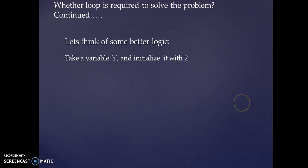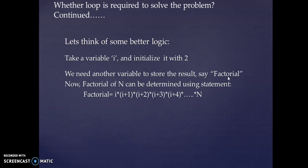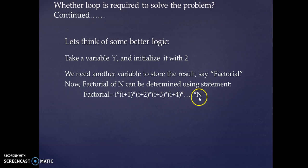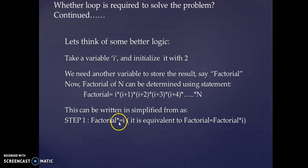Take a variable i and initialize it with 2. We need another variable to store the result — let's call it factorial. Factorial of n can be determined using the statement: factorial = factorial multiplied by i. Here i is 2, i+1 is 3, i+2 is 4, i+3 is 5, and so on up to n. This means we multiply the current value of i into factorial and store the result back in factorial.